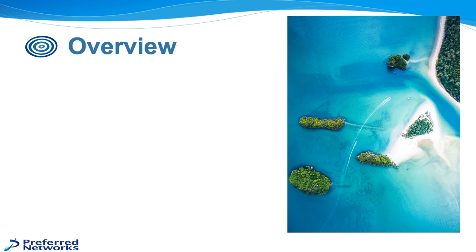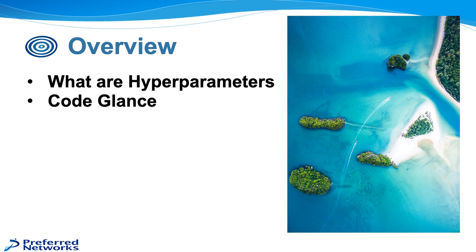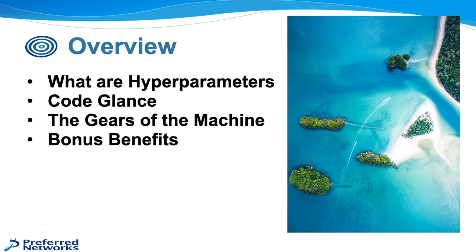I've been working for a company called Preferred Networks. You might know us as the company that originally created Chainer, which was a precursor to PyTorch today. I was working on the Chainer team for quite a while, and currently I'm now working on the auto machine learning. So let me give you an overview of what we're going to talk about today. The first thing is I wanted to focus in a bit on hyperparameters themselves, give you a glance at what the code would look like that we're going to be using for Optuna, then talk about the gears of the machine, what makes Optuna work and how it does what it does. Then some of the bonus benefits that you get by working with a framework like Optuna, and then more specifically how you would go about applying that to PyTorch.